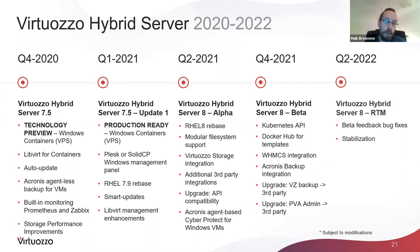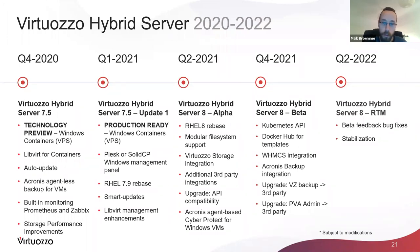We are also going to introduce Docker Hub for templates. Right now we ship with a few OS templates like CentOS, Ubuntu, and Debian. In future, we want to use Docker Hub to download and assemble templates for rapid container deployment, giving service providers access to thousands of applications and OS options. We'll have WHMCS integration — it currently fully supports Virtuoso Hybrid Server 7 and we want to build it for version 8 as well. In Q2 2022, we'll publish the RTM version of Virtuoso Hybrid Server 8, incorporating beta feedback, heavy bug fixing, and stabilization.